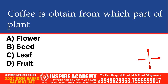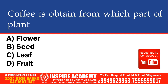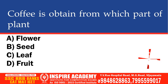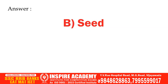Coffee is obtained from which part of plant? Options: Flower, Seed, Leaf, Fruit. The correct option is Seed.